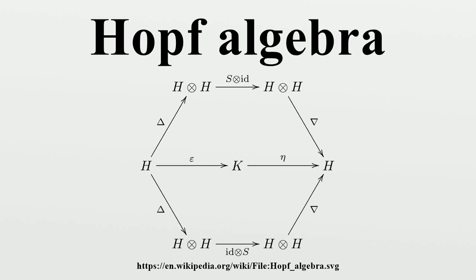Analogy with groups: groups can be axiomatized by the same diagrams as a Hopf algebra, where G is taken to be a set instead of a module. In this case, the field K is replaced by the one-point set, there is a natural counit, there is a natural comultiplication, the unit is the identity element of the group, the multiplication is the multiplication in the group, and the antipode is the inverse.